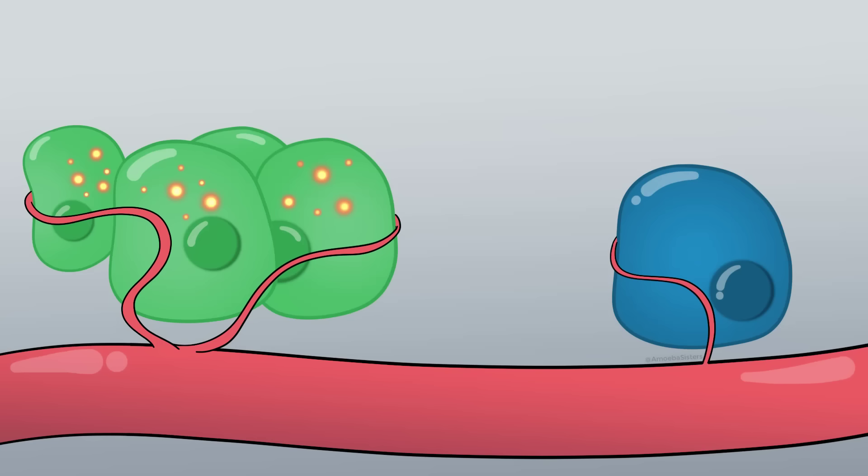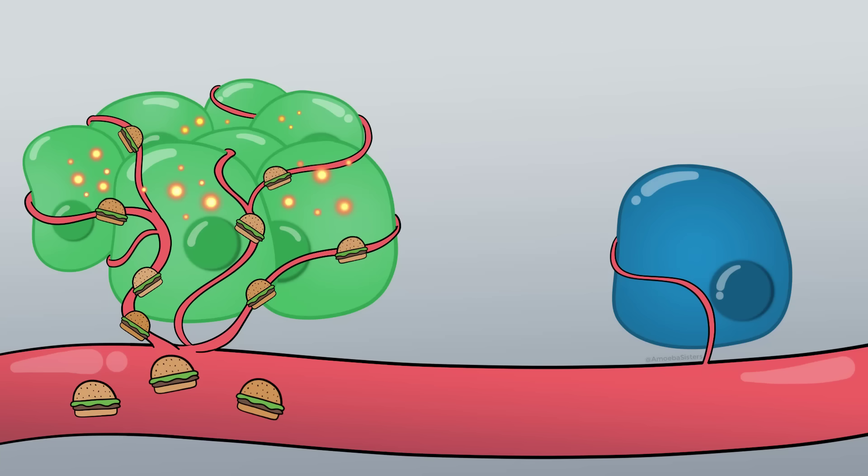Some cancer cells have the ability to secrete their own growth hormone that makes blood vessels divert over to those cancer cells and supply the cancer cell with nutrients, which can take nutrients away from healthy cells.